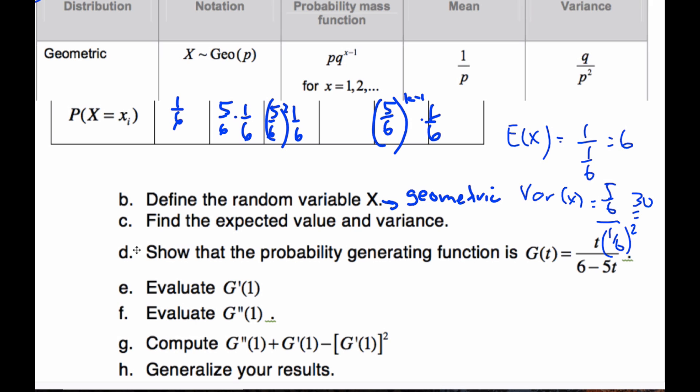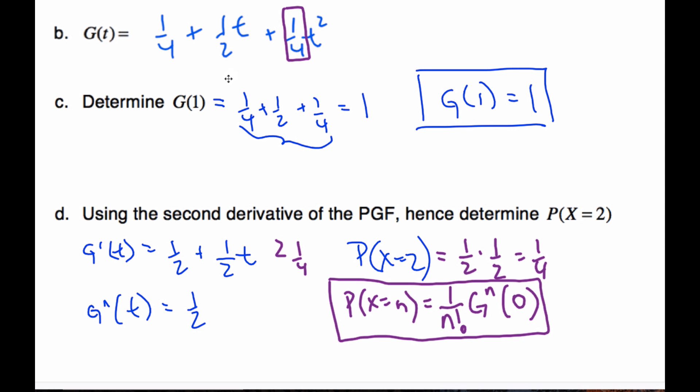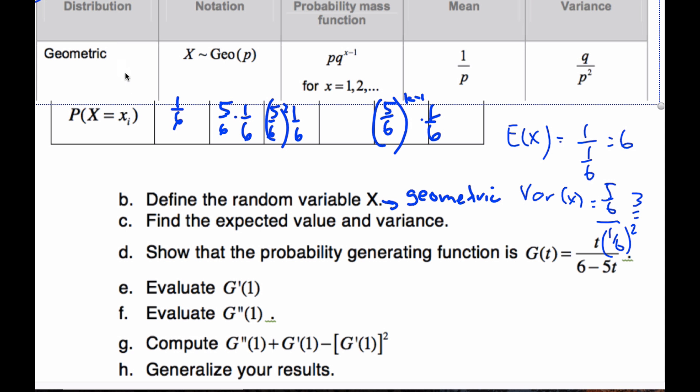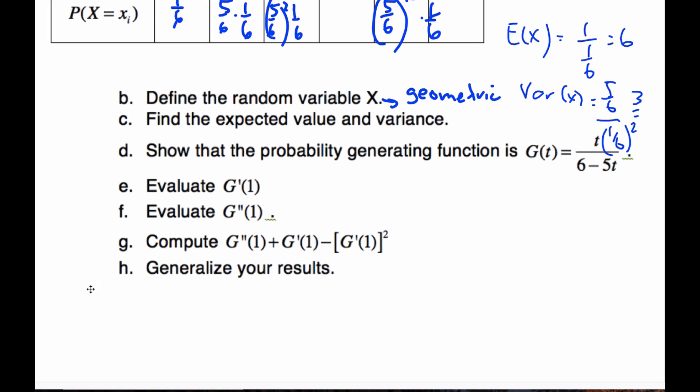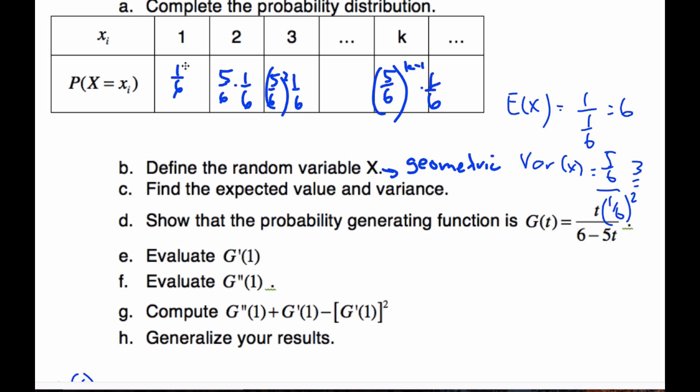So now I want to show the probability generating function G of T is this particular function here. In order to do so, we're going to create our probability generating function from first principles. To find the G of T, I know what I do is I take my probability times T to the power of one, take my probability times T to the power of two, and that's how I create it.